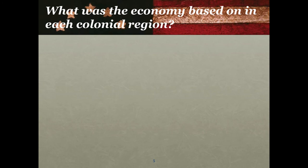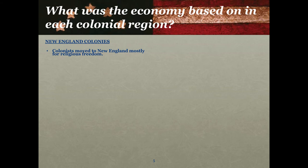Our next left side question is: what was the economy based on in each colonial region? Each region made its money in a slightly different way. Although if we were doing a Venn diagram there would also be similarities, there were differences that were more distinct than the similarities. Starting with the New England colonies — most of the people who moved there moved there for religious freedom, so this was a very religiously pious region. Their economy was based mostly on natural resource-oriented things.